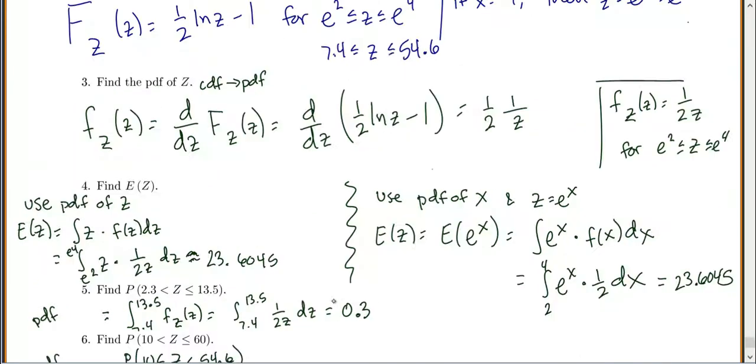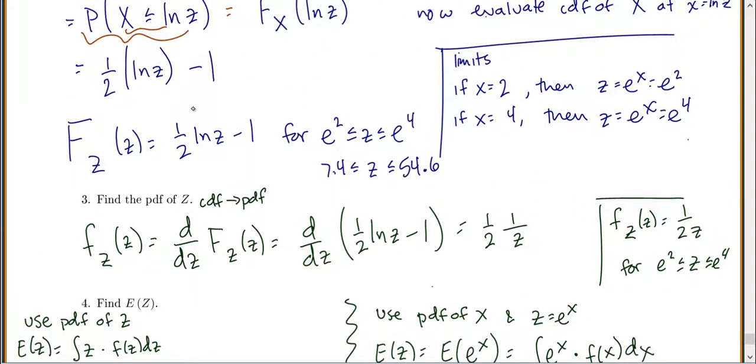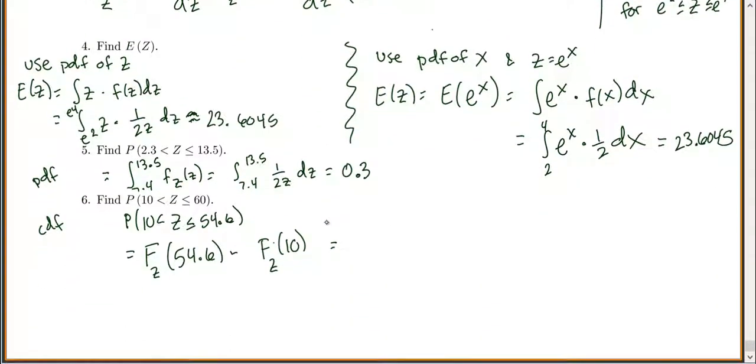So the CDF we have is 1/2 natural log of z minus 1. So we're going to have 1/2 natural log of 54.6 minus 1 minus 1/2 natural log of 10 minus 1.